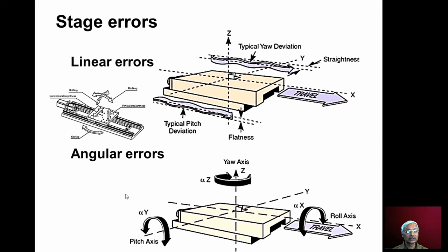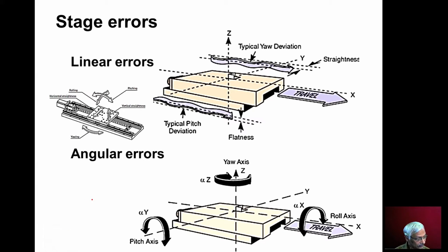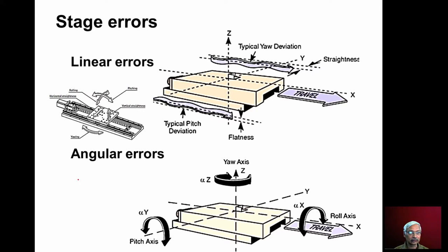In the previous lecture we discussed about different types of stages: linear stages, rotary stages, and what are the different kinds of drives used in stages. Now we will understand what are the various errors that occur in the metrology stages.